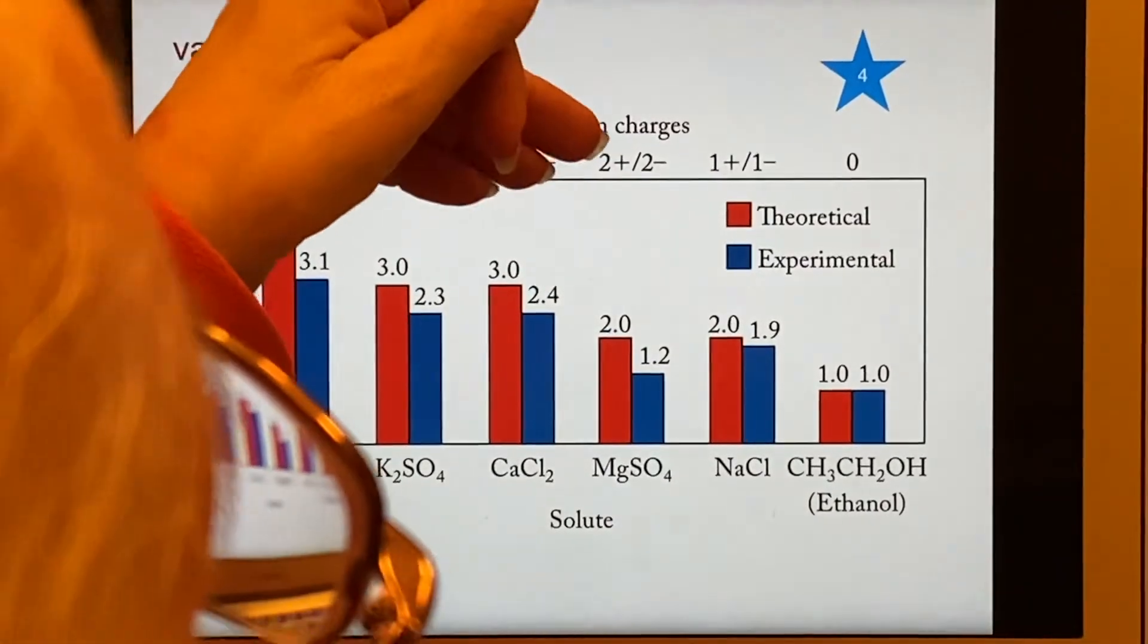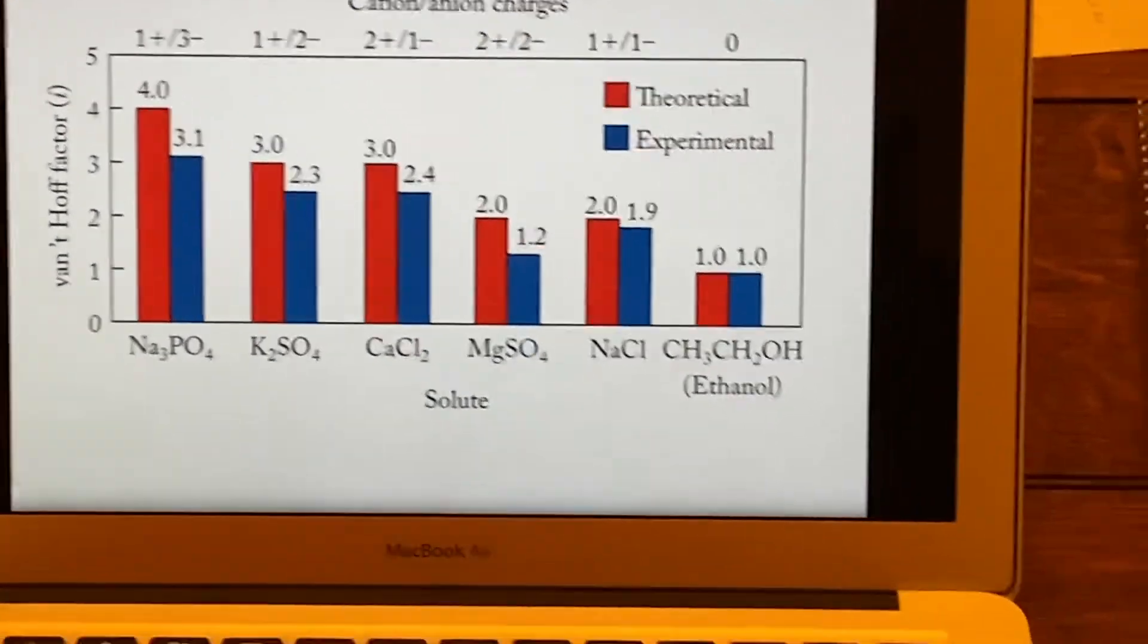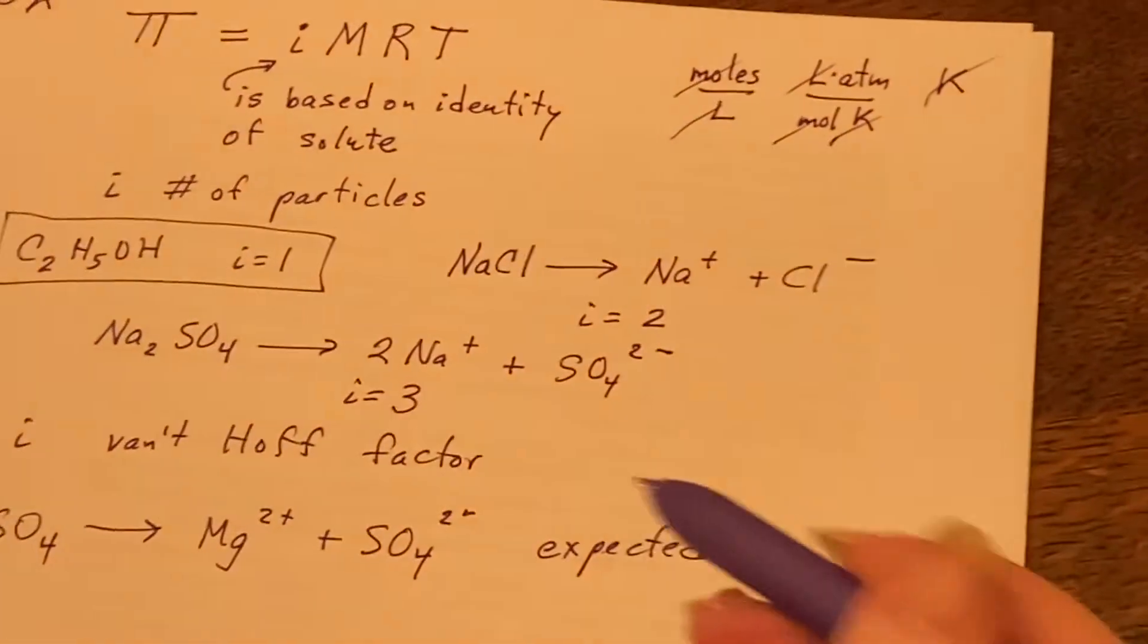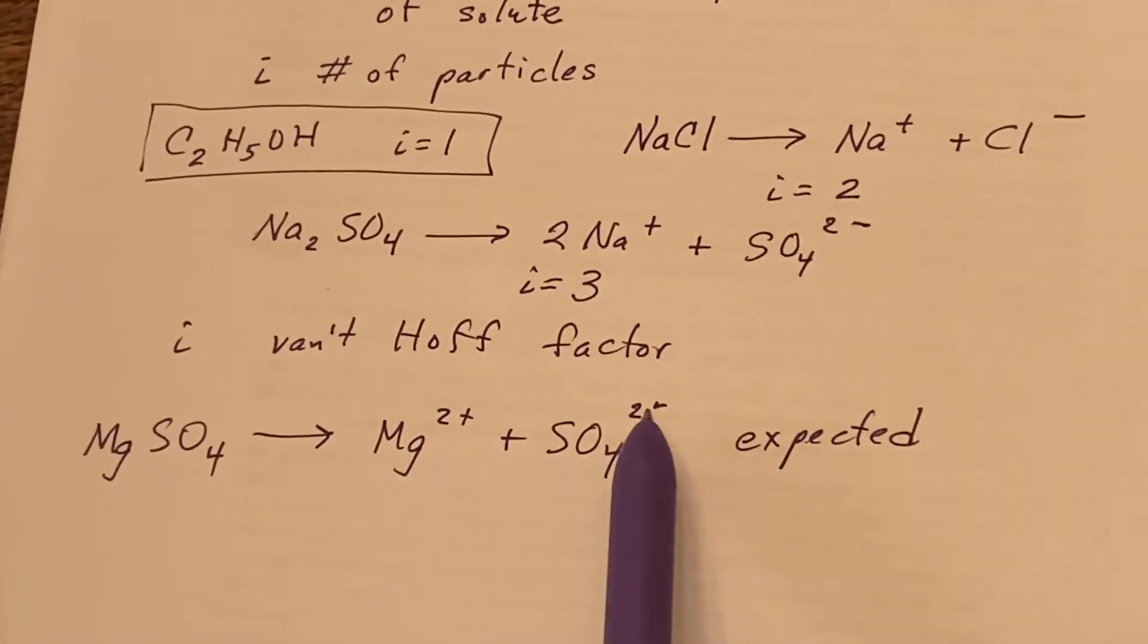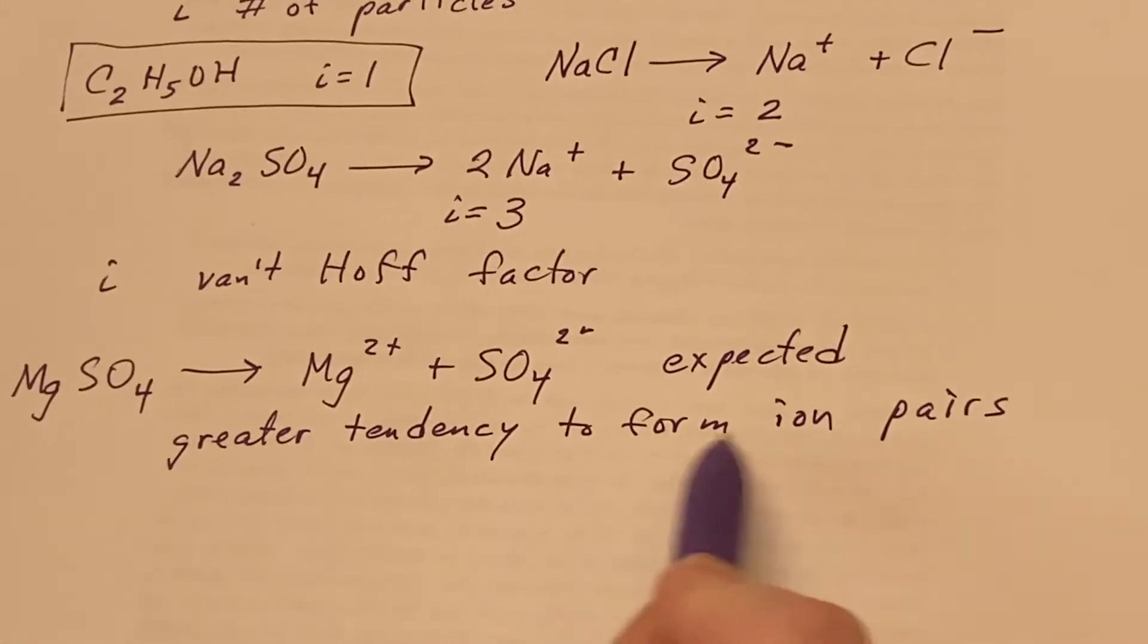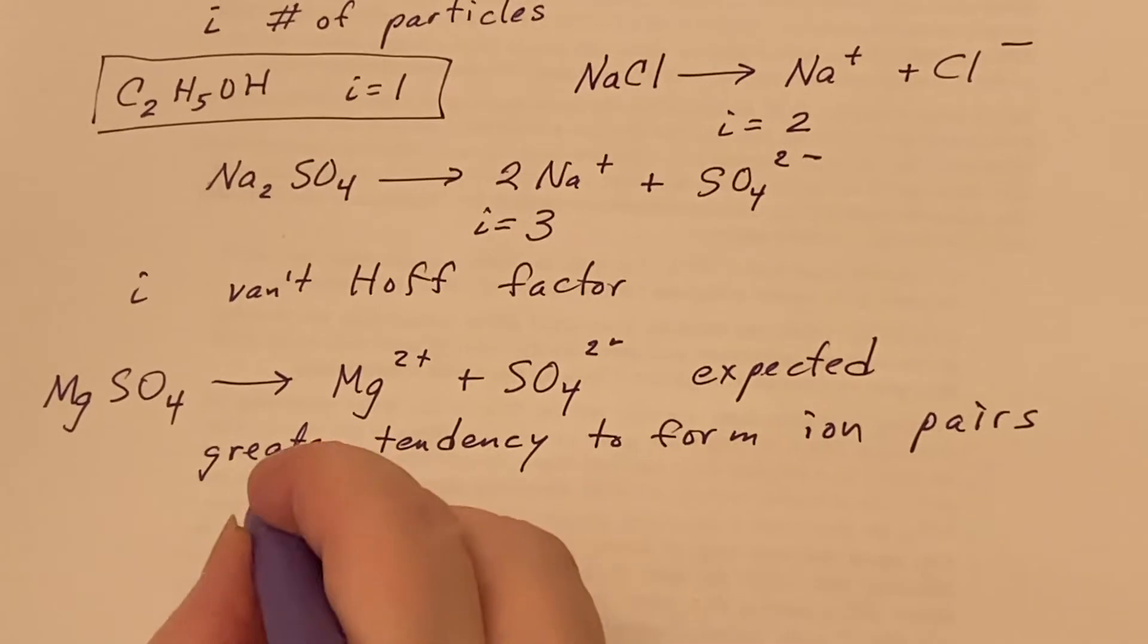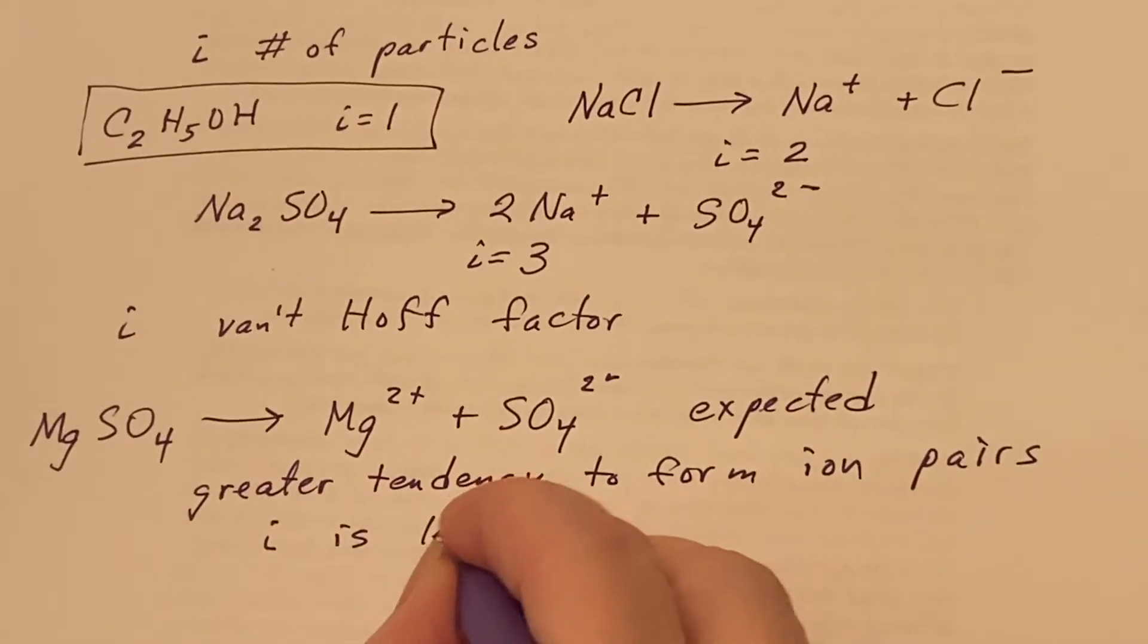Because one of them has a plus two and the other has a minus two, and they're much more attracted to each other. Electrostatic attraction than something that's a plus one and a minus one. The plus two and the minus two attract each other a lot more. So this greater tendency to form ion pairs means that i is less than we expected.